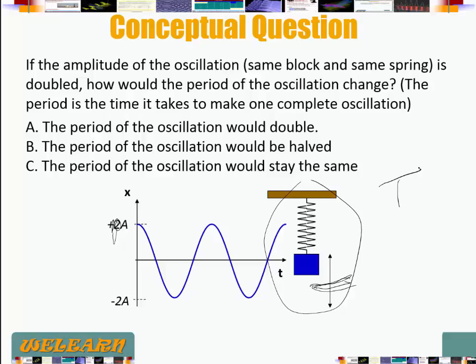And it's going to have a period T. Now what if we double the amplitude and make it instead oscillate with an amplitude of twice A. So twice A minus twice A. And this becomes 4A overall. What would happen to the period?